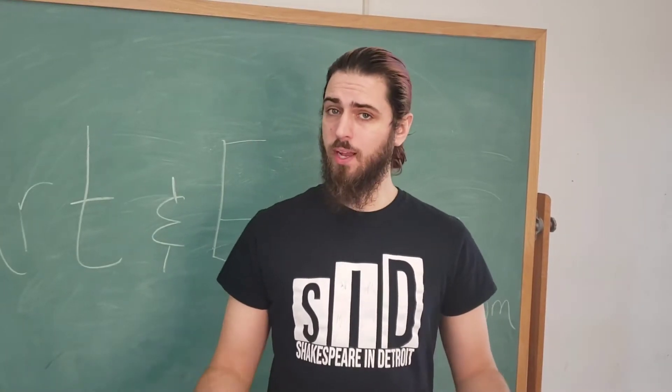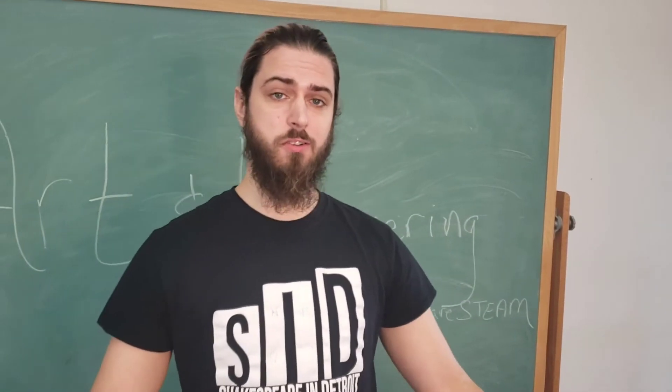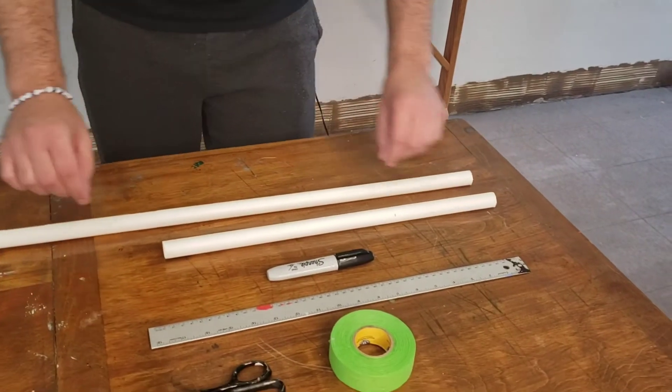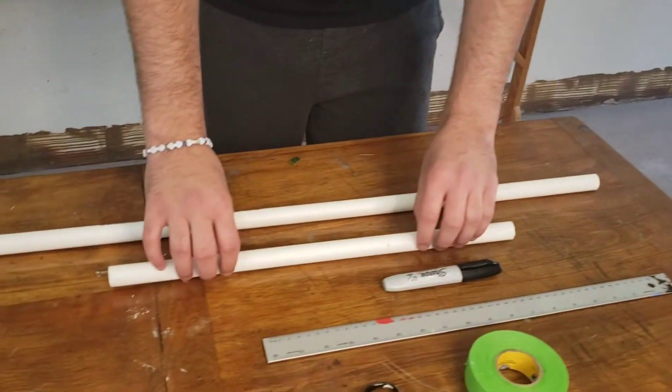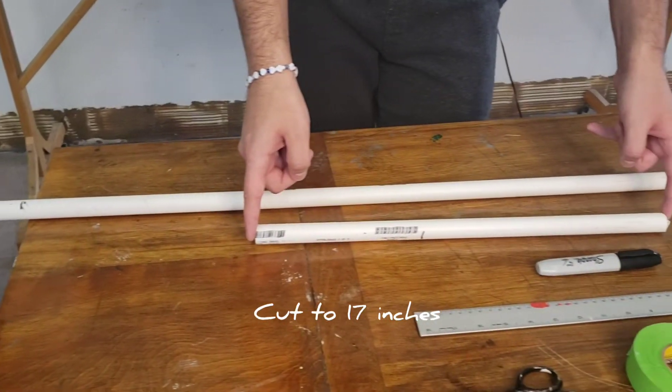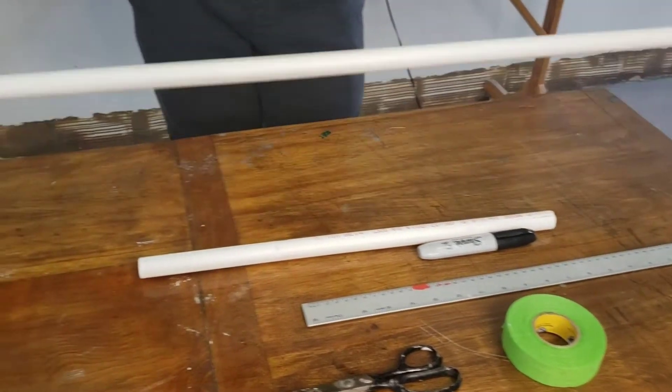Alright, so now that we have all of our materials gathered, we can construct our swords. We will take our pieces of PVC piping cut to two different lengths, which you can ask them to do at the hardware store for you. One cut to 17 inches, the other to 42 and a half.